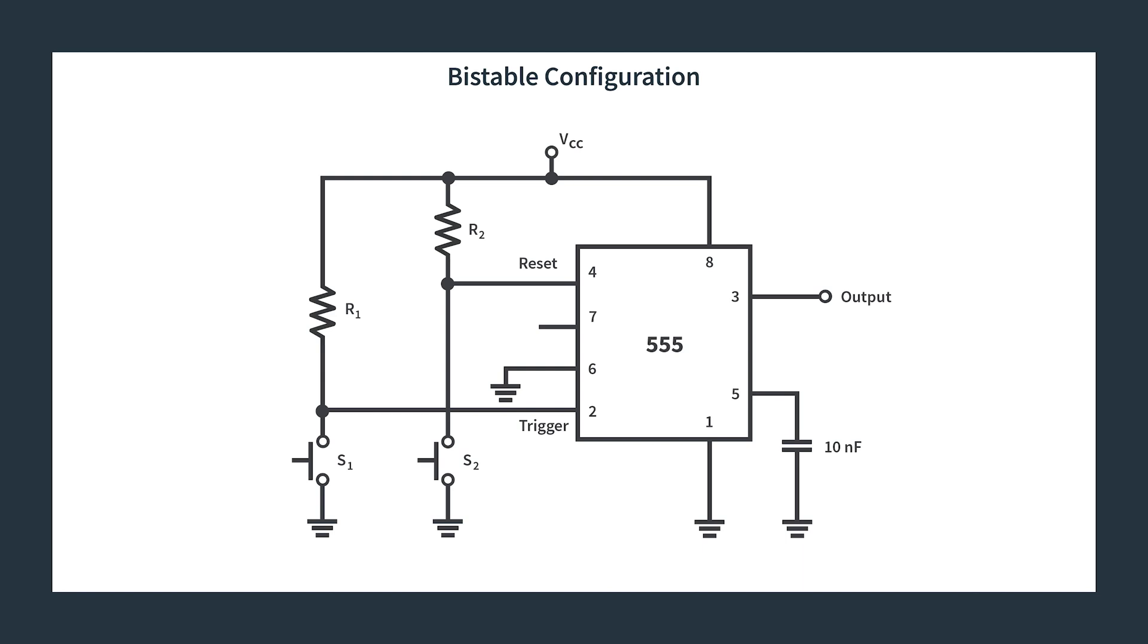Then we have pin five, that control pin, where you can override the two-thirds VCC input to the upper comparator, which we don't want to do in any of these configurations. So we tie it to ground via a capacitor to get rid of any spurious noise that may occur on the pin.